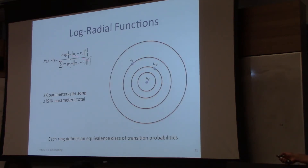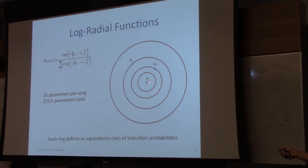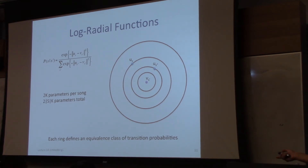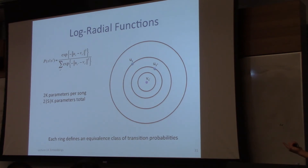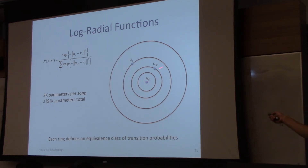What are some properties of this particular form? I call this a log-radial function. In a 2D visualization of where the exit point of song S prime is, every song whose entry point lies on a circle forms an equivalence class of transition probabilities — they're all equally probable. Songs whose entry points are equidistant from the exit point of S prime are equally probable, and the further you are, the less likely you are to transition. The decay of the probability is exponential.